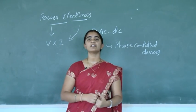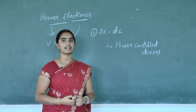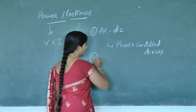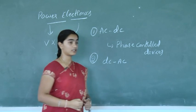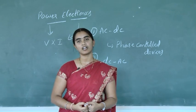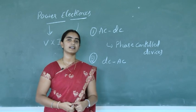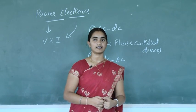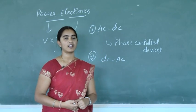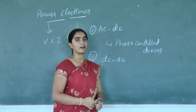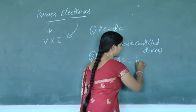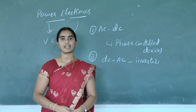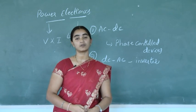The second conversion is DC to AC. If the input is fixed DC and the load requires AC, then it has to convert DC to AC. For that conversion, we place a power electronic device called inverters. Inverters convert fixed DC to variable AC by varying voltage as well as frequency.